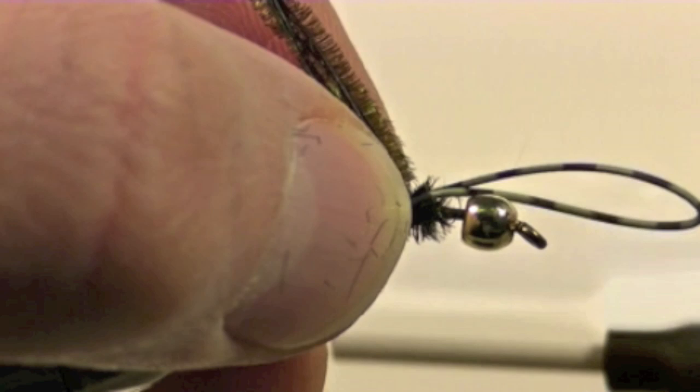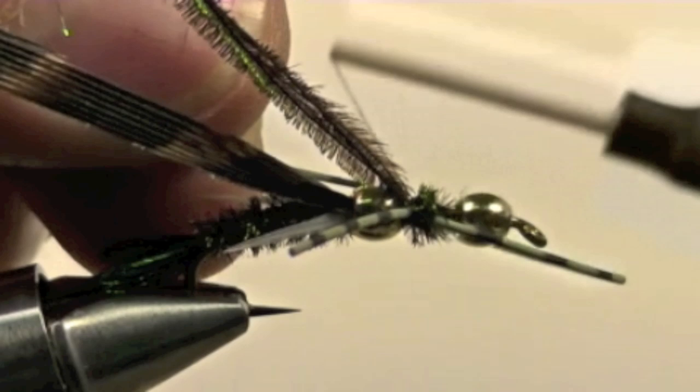Now we will tie on some rubber legs to each side of the fly, and then we will wrap the peacock a little bit more right in the middle.